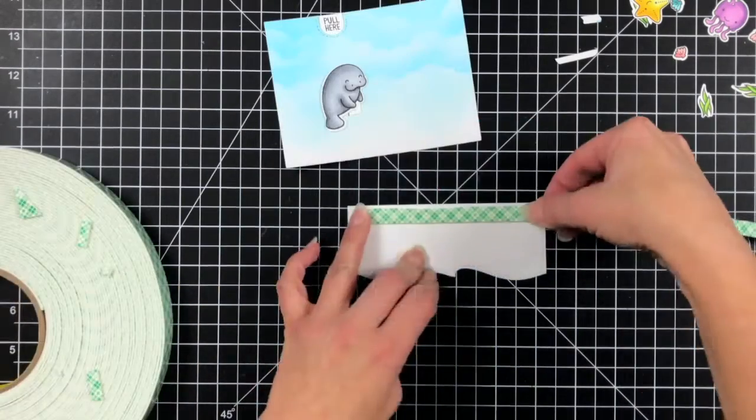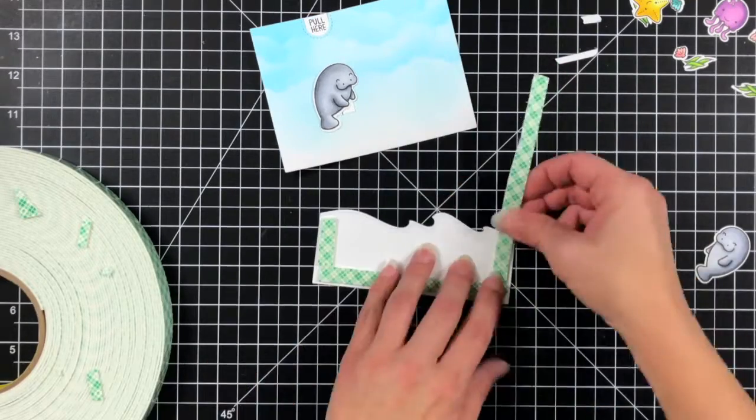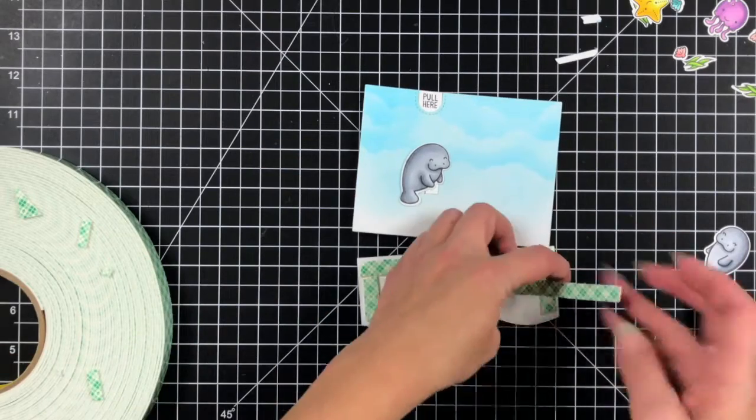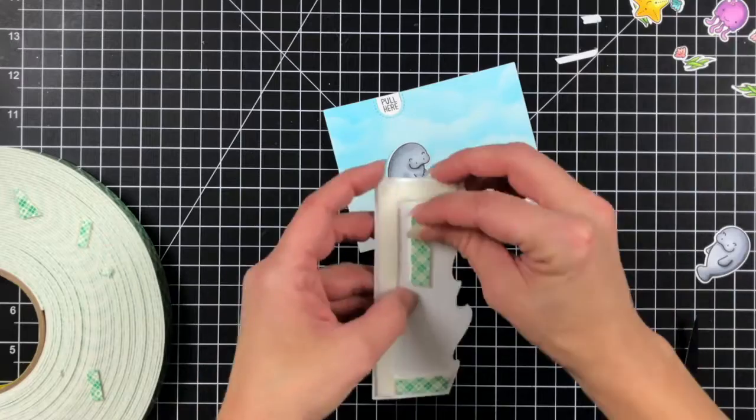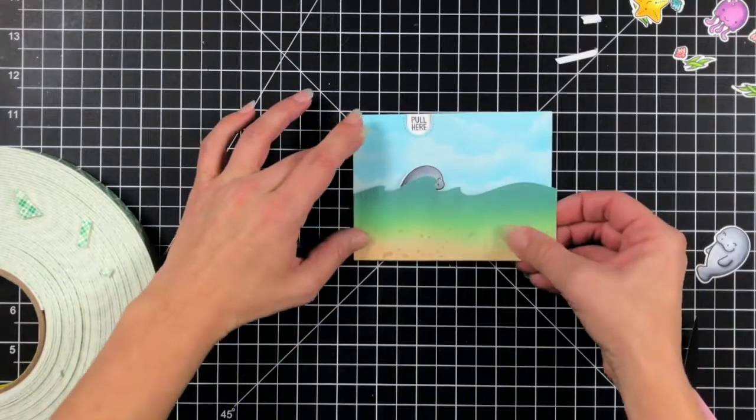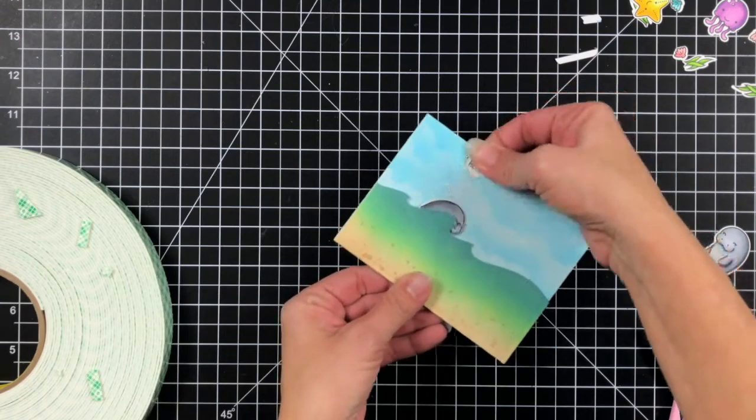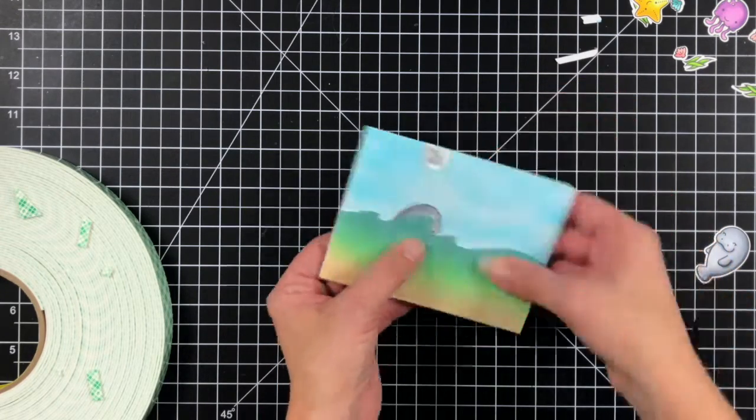And now here I'm going to be popping this up with some foam tape because I want to be able to give my manatee room to move up and down. So I'm lining the bottom and the sides and I'll put a little bit more on the right hand side. You just want to make sure that it's not going to be where your critter is otherwise it's not going to move. So you want to be able to give it plenty of room to move up and down. And it's working great.